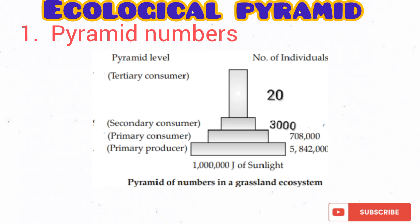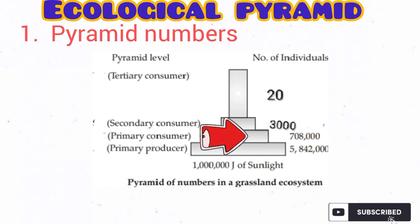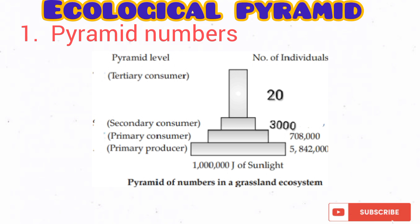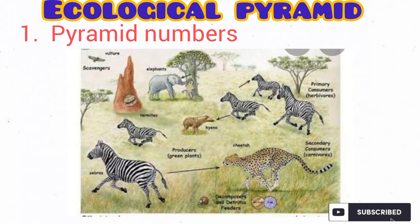Take a look at the diagram. We look at the producers — we have more than 5 million producers. Take a look at the primary consumers — we have 708,000 consumers. And the secondary consumers, we have 3,000. The tertiary consumers, we have 20. The pyramid of numbers is actually gotten by counting the number of individuals in each trophic level in an ecosystem or in a food chain. Take a look at this grassland ecosystem. When you count the number of individuals in the producer, primary consumer, secondary consumer, and tertiary consumer trophic levels, and represent this in a graphical manner, you have your pyramid of numbers.